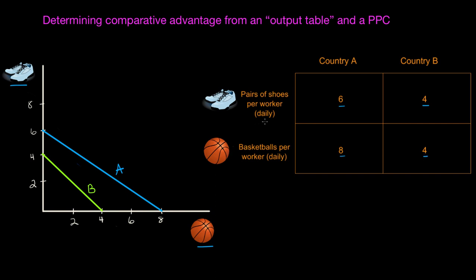Notice that in this table, the variable — the data that appears in the table — is the output. This is the potential output of the two goods that the country can produce with a fixed amount of inputs. Each worker — workers are our input — can produce the numbers of basketballs and shoes indicated in the table.